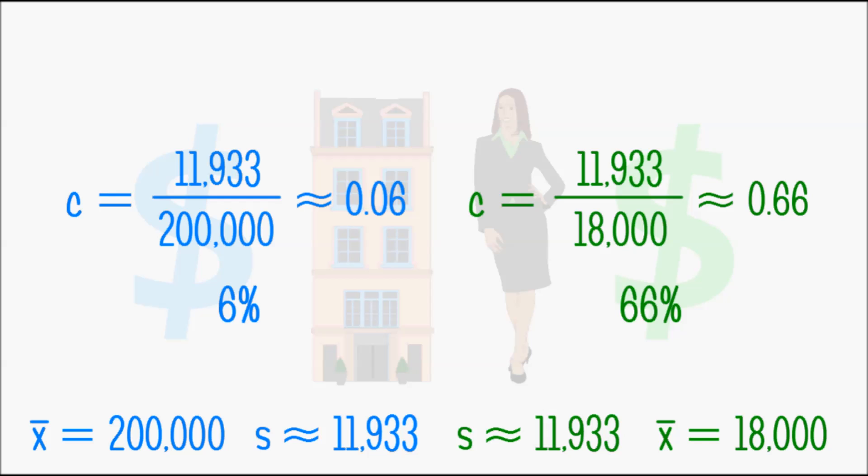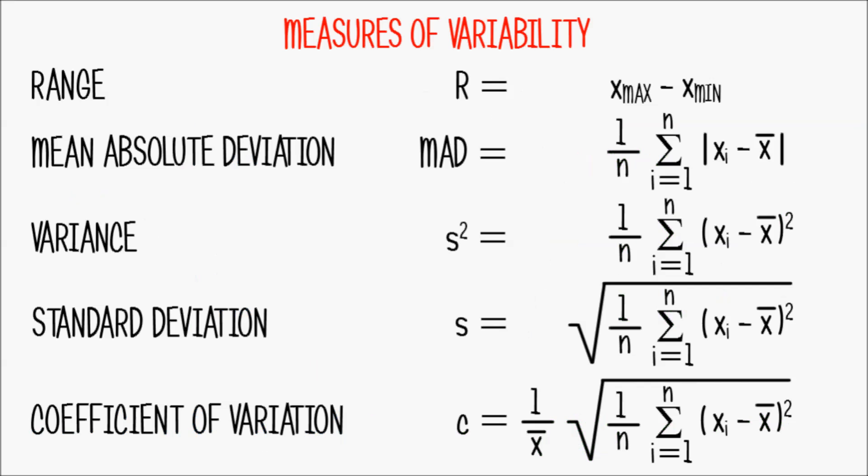And here are all measures of variability at one glance. The range which is the largest minus the smallest data value. The mean absolute deviation which is the average of the absolute differences between all data values and their arithmetic mean.